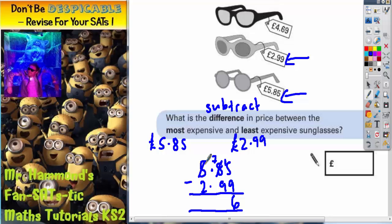That becomes four and that seven now turns into 17. 17 take away nine is eight, and four take away two is two. So your final answer is £2.86.